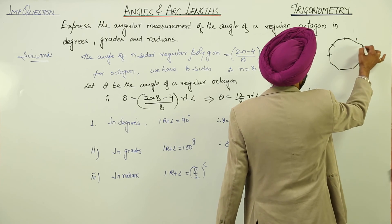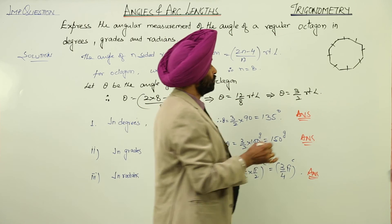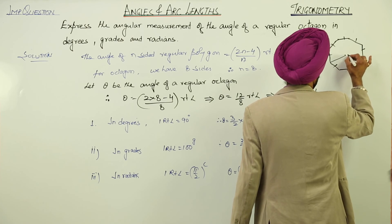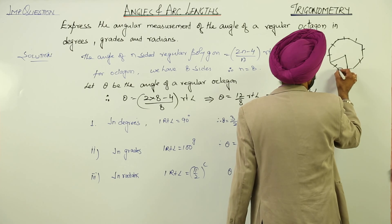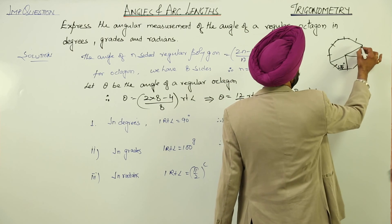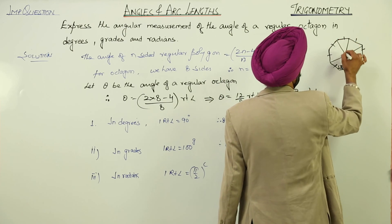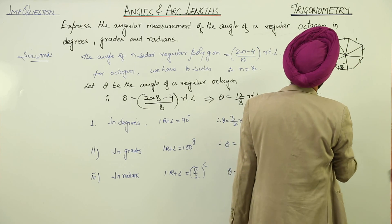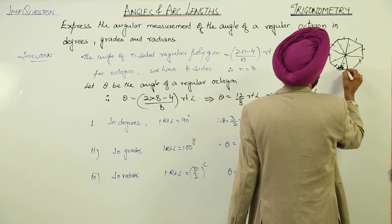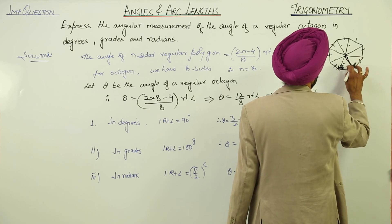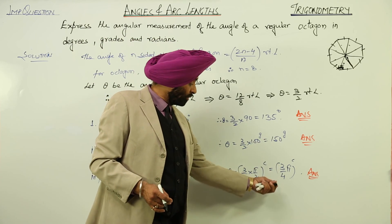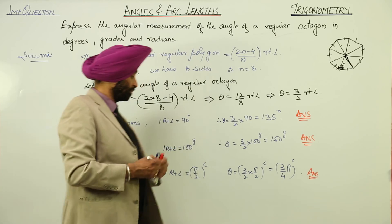1, 2, 3, 4, 5, 6, 7, 8. So now suppose this is the center, then this angle is 135 degrees. Like this we can join this one. So this angle is basically, it will be here not here. This angle is 135 degrees in degrees, 150 grades, or 3 by 4 pi.